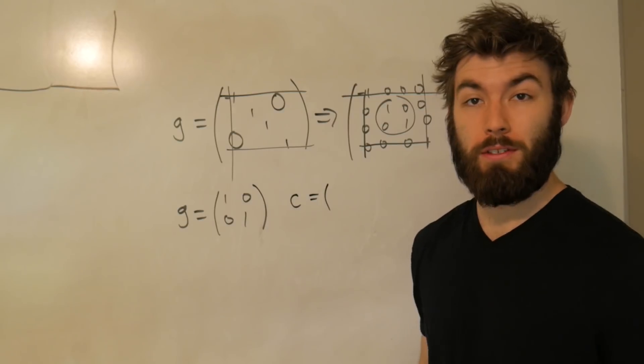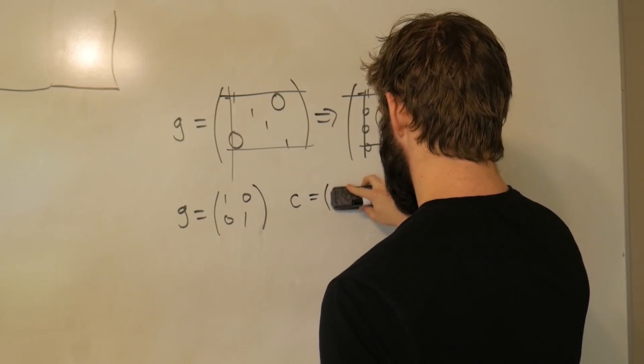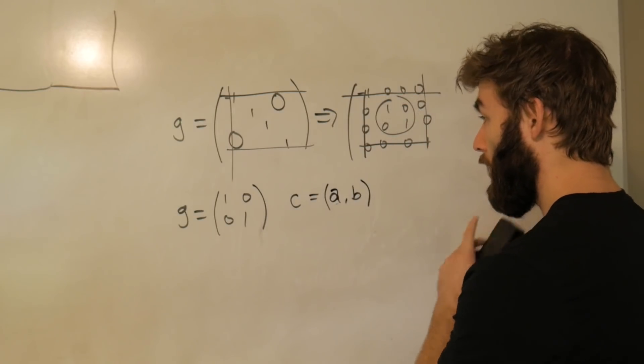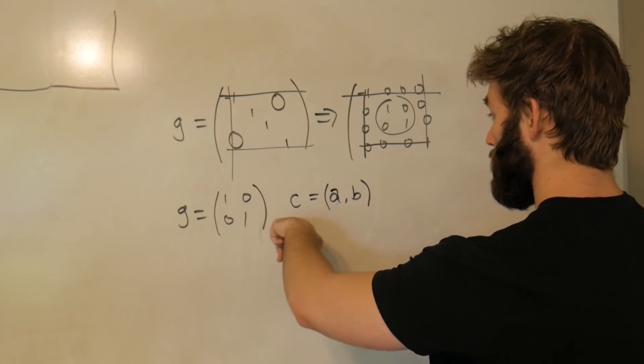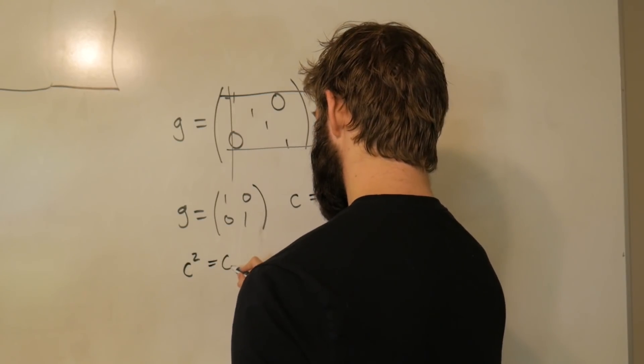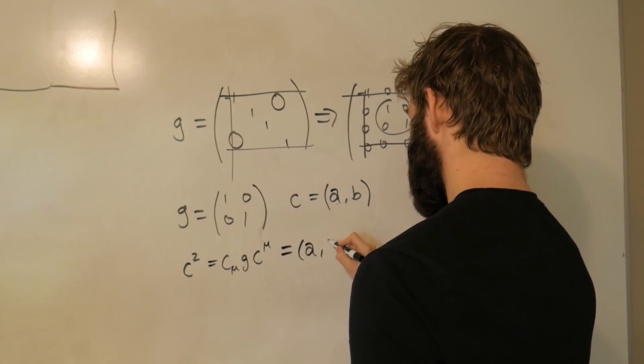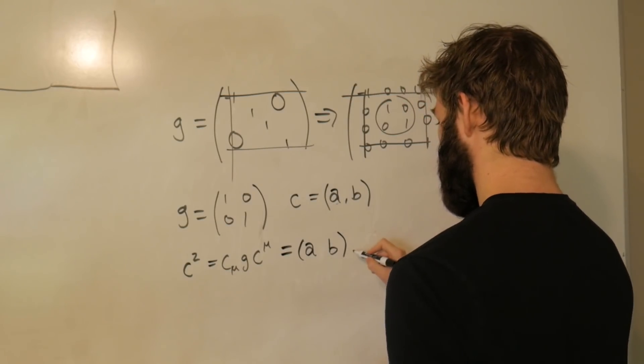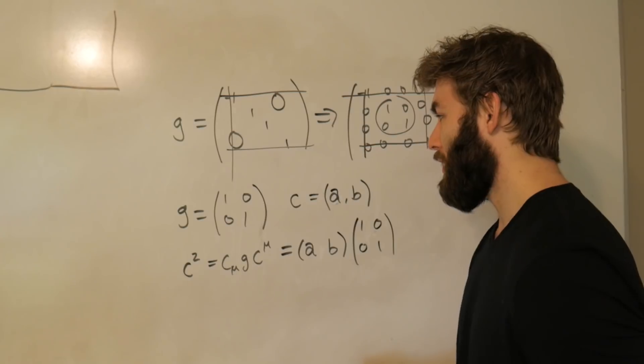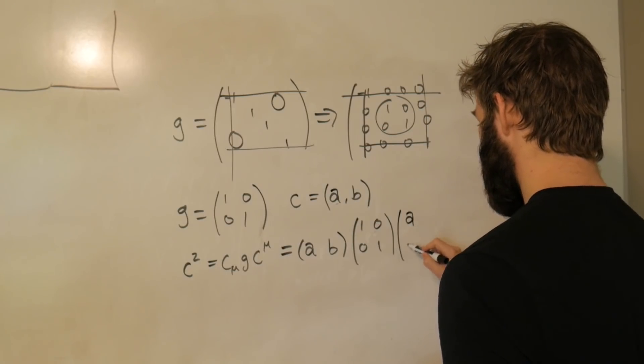And what I want to do now is I want to define a new vector that I'm going to call c. And this is just going to have two components to it. It's going to have some component a. Let's make it a lowercase a. And we're going to have some component b. And we're just going to go through the same thing. We're going to find out what the dot product of this vector is with itself.